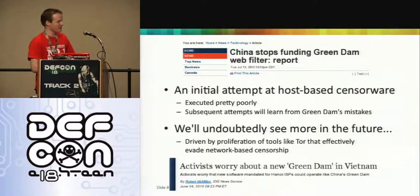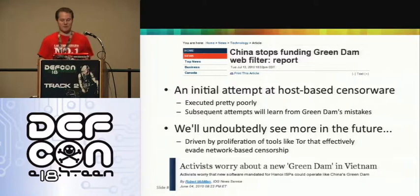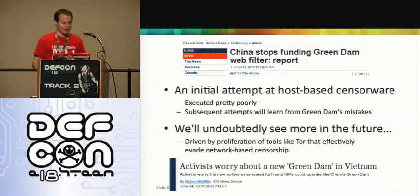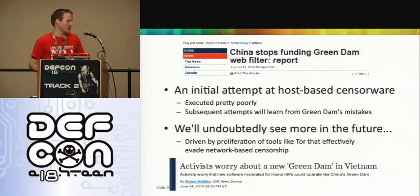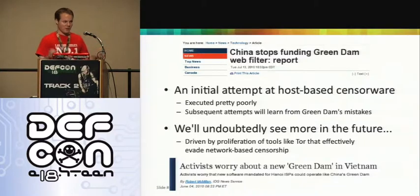Getting back to the broader theme: Green Dam was an initial attempt at host-based censorship software. The company recently lost its government funding, and from this first attempt we can see they did a poor job — they didn't hire the right company, didn't cross their T's and dot their I's, and underestimated the backlash. It's scary to think that in the future they will do a much better job and won't make the same mistakes. The success of Tor and these circumvention tools will only drive more governments to approach censorship from the host-based level. A new host-based censorship software was recently reported in Vietnam — we'll undoubtedly see more of this.